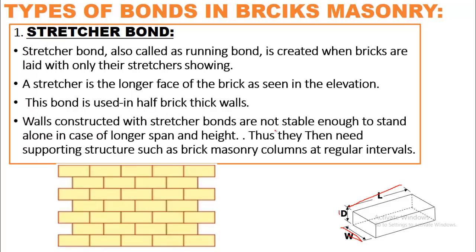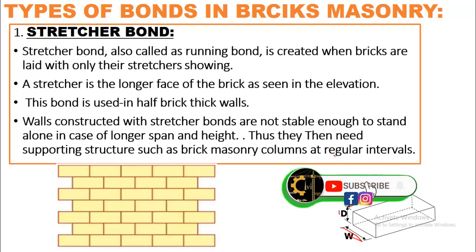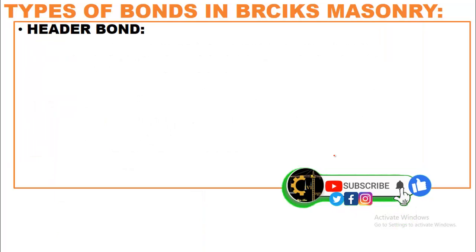Walls constructed with stretcher bond are not stable enough to stand alone in case of longer spans and height. They need supporting structures such as brick masonry columns or concrete columns at regular intervals to provide support.